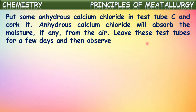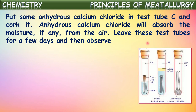Now in the third test tube C, let us take some anhydrous calcium chloride — no water is added. Anhydrous calcium chloride is a salt which absorbs moisture and water vapor from the surroundings. So the calcium chloride kept in test tube C absorbs all the moisture present in the air inside. Now it is left with only dry air, so the iron nails in test tube C are in contact with only air.